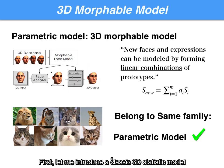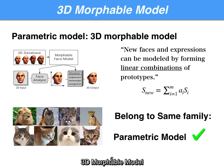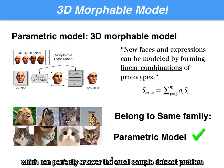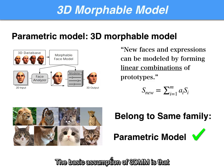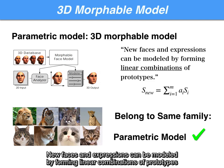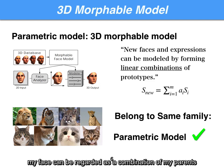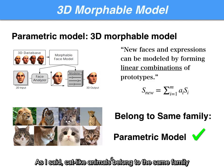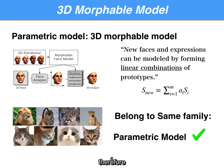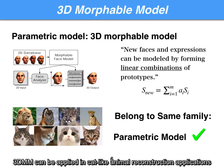First, let me introduce a classic 3D statistical model: the 3D morphable model, also called 3D MM, which can perfectly address the small sample dataset problem. The basic assumption of 3D MM is that new faces and expressions can be modeled by forming linear combinations of prototypes. For example, my face can be regarded as a combination of my parents. Since cat-like animals belong to the same family and share similar face geometry, the 3D MM can be applied in cat-like animal face reconstruction applications.